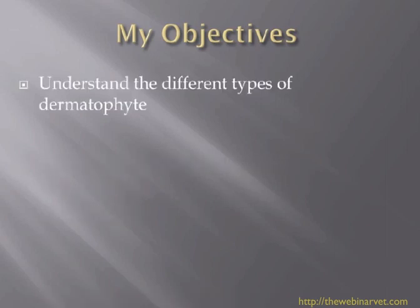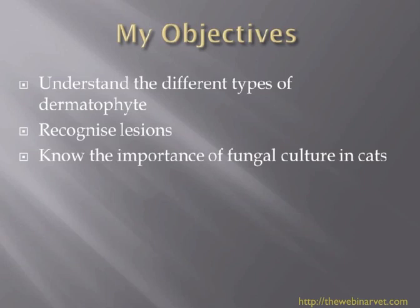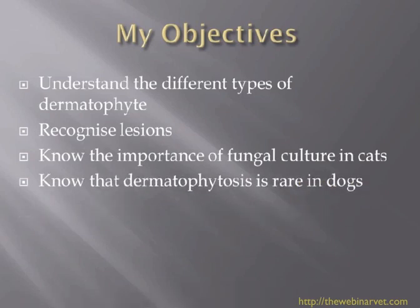My objectives today are that by the end of this webinar you understand the different types of dermatophytes, that you'll be able to recognize lesions, and that you'll know the importance of fungal culture in cats. We really should, as part of our baseline database with any cat presenting with a dermatological problem, look to be doing a fungal culture. Realize that dermatophytosis is rare in dogs — some people see a lesion on a dog, a circular lesion which is usually an epidermal collarette, and immediately think of dermatophytosis, which is not the case.